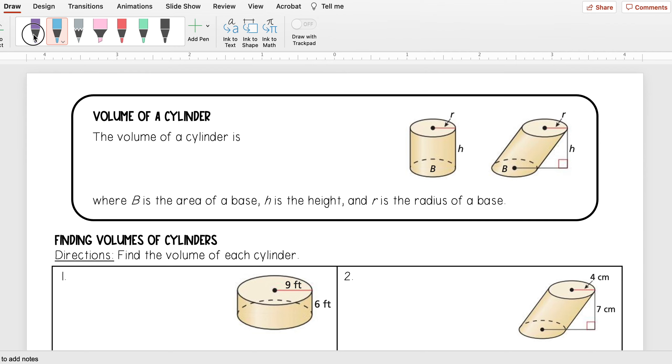So for this video we're going to be looking at finding the volume of a cylinder. The volume of a cylinder is still going to be base times height. However, with a cylinder my base is always going to be a circle. And so the area of a circle is pi r squared. So in other words, the volume of a cylinder is pi r squared h, where h is the height and r is the radius of a base.